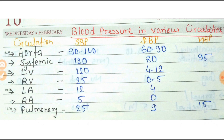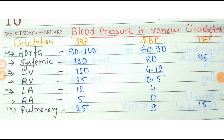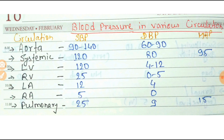Left atrium pressure is 12 mm of Hg diastolic. Left ventricle systolic is 120 mm of Hg, while diastolic blood pressure is 4 to 12 mm of Hg. In the pulmonary circulation, systolic blood pressure is 25, diastolic is 9, and mean arterial pressure is 15.